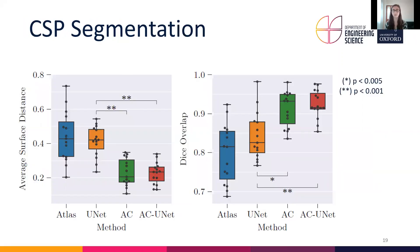For the CSP segmentation we also have quantitative results, since we have manual labels for our test set. The four experiments are shown: the atlas labels reflect the level of error in our noisy training labels, and the U-Net trained with atlas labels shows the same error — demonstrating that error directly propagates from the labels to the U-Net predictions.